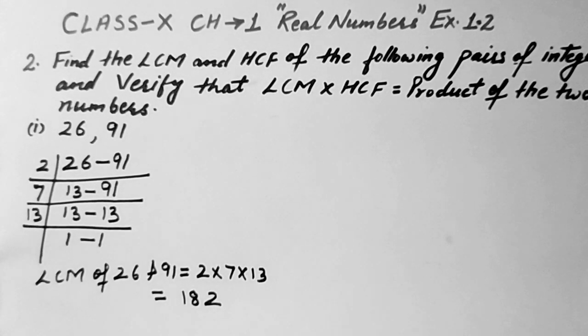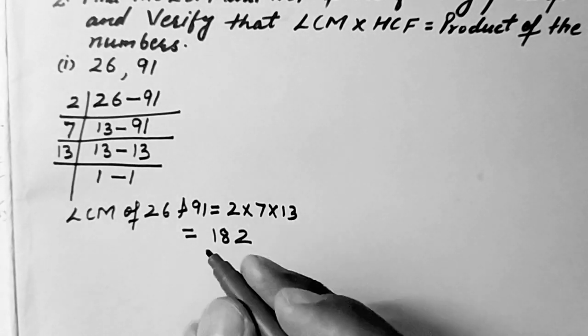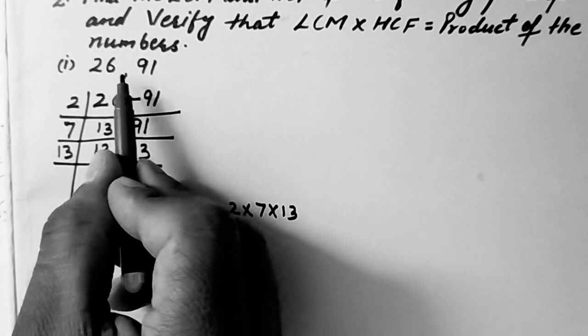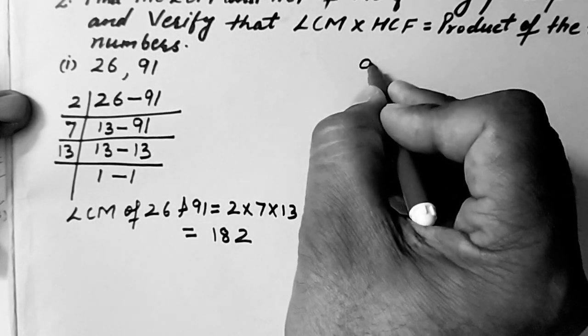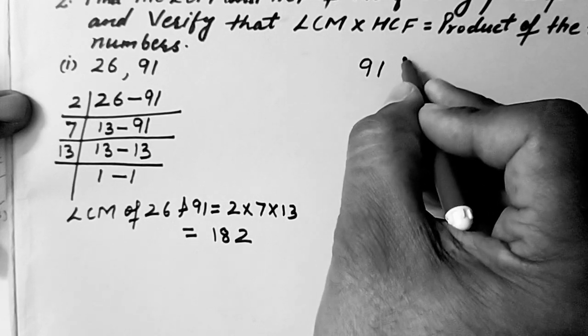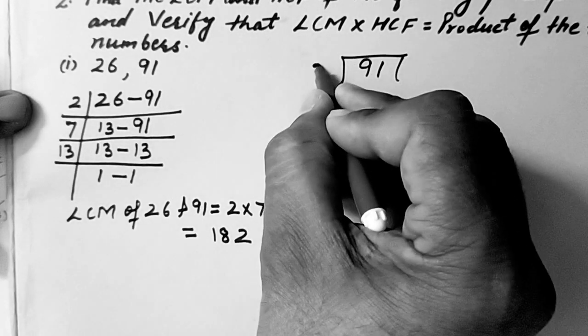Now we will find the HCF of these two numbers. HCF we will find with the help of continued division method. So from these two, 91 is bigger. So we will write 91 here in dividend and 26 as divisor.